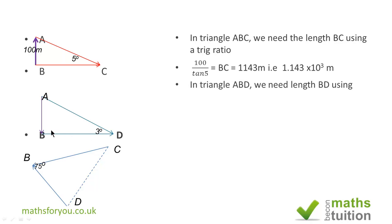For triangle ABD, we need to find the distance from boat D to the cliff, DB. Similarly, we do 100 divided by tan 3, and we get 1908 meters, or 1.908 × 10³ meters.